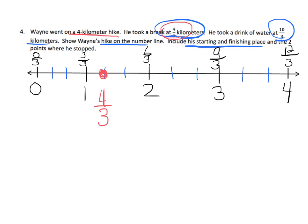And so now we have our last fraction to place, which is 10 thirds. Well, if this is 9 thirds, then 10 thirds is right next door. So here is 10 thirds. And I'm going to put W for he drank some water, and I'm going to put B for he took a break. And that is our line with the two points located.